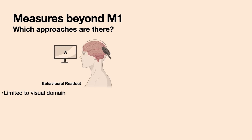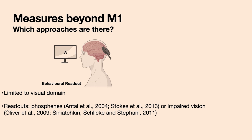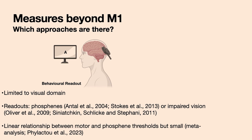First, we could look into behavioral readouts. Up till now, people only looked into the visual domain here, specifically into phosphenes — evoking phosphenes due to TMS, or trying to impair vision during a task. From this research, and a recent meta-analysis, there is a significant relationship between motor and phosphene threshold, but it's very small, and there might be many other factors contributing to excitability differences.